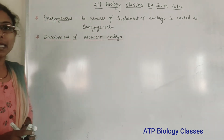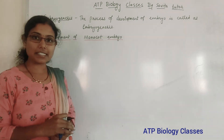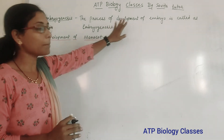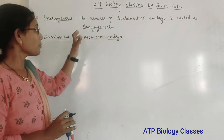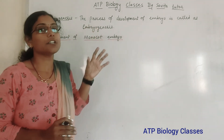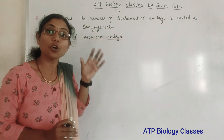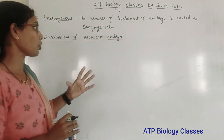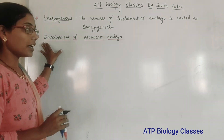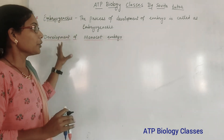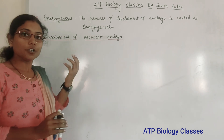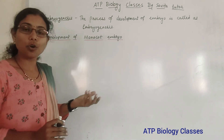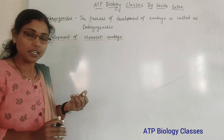What is meant by embryogenesis? Embryogenesis is the process of development of an embryo. Genesis means development or formation. In plants, there are two types of seeds produced: one is monocot seed and another one is dicot seed.